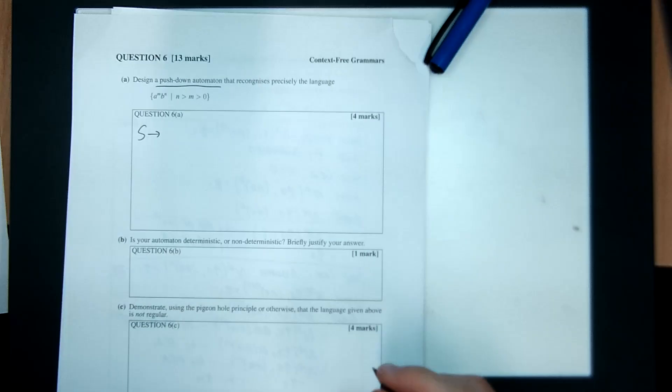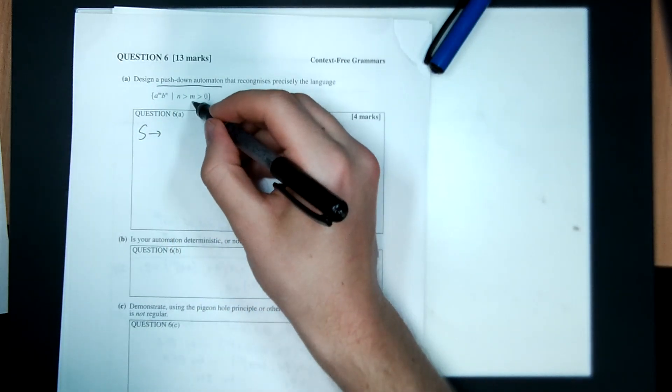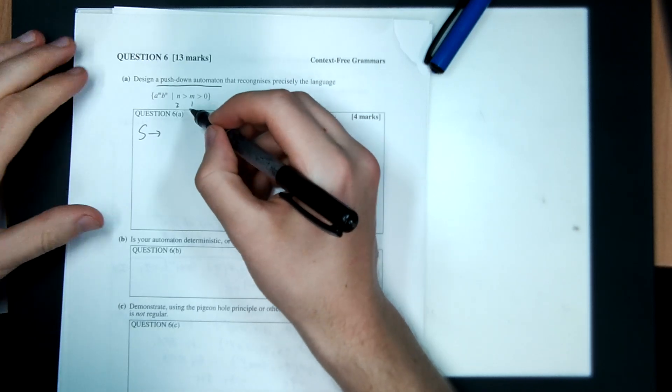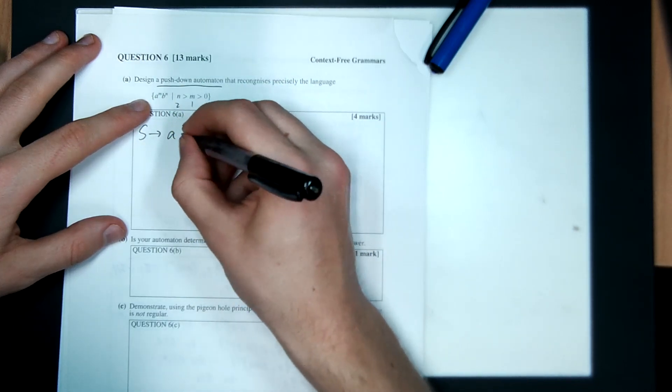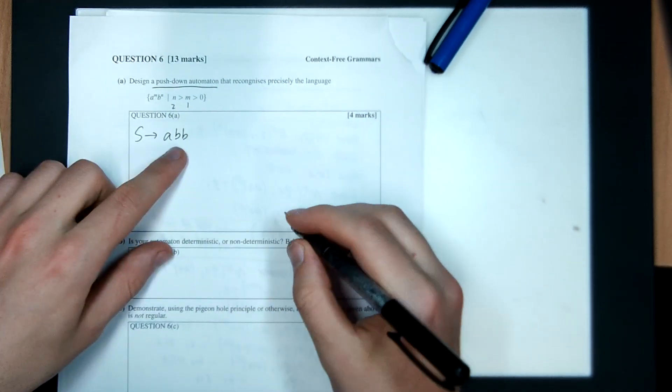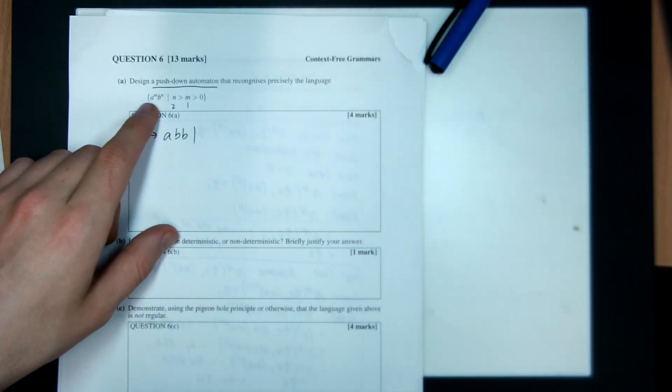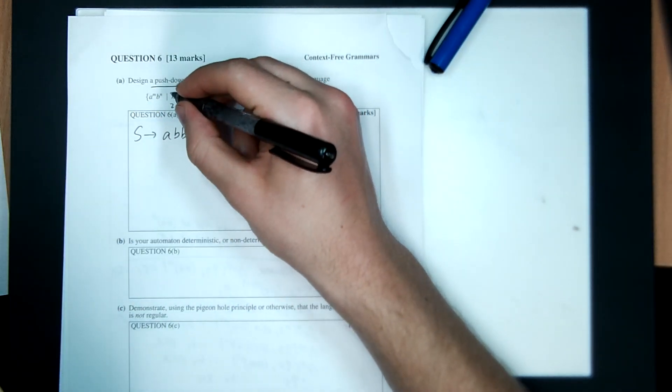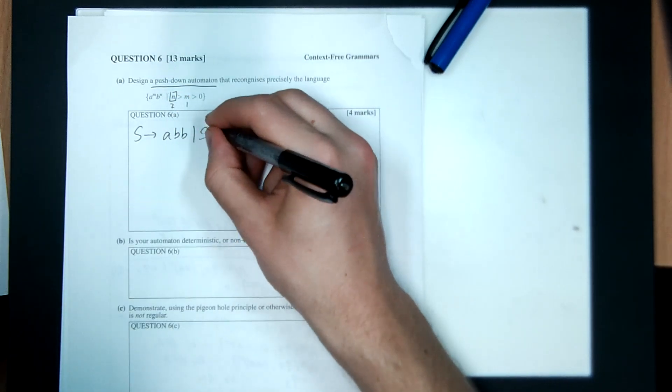So what's the grammar for this? Well, what's the smallest valid string? I guess M has to be at least one, and N has to be at least two. So the smallest valid string is one A and then two B's. Okay, what else can I do? Well, I could add an A on the left. I can't add as many A's as I want on the left. No, I can't. I'm allowed to push N as big as can be. So I can throw infinity B's on the right, and that's okay.